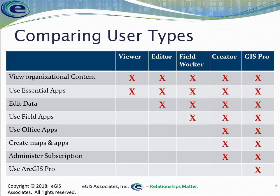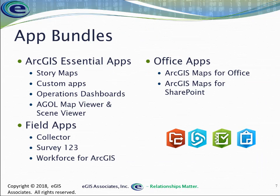The last is the GIS professional, which has all the capabilities of all the other types, with the additional capability of being allowed to be assigned an ArcGIS Pro license. So that new desktop application, ArcGIS Pro, can be assigned to a GIS professional user so they can use it on their desktop, do analysis, and work in that traditional desktop environment. These new app bundles associated with user types are another new thing coming as part of this update.